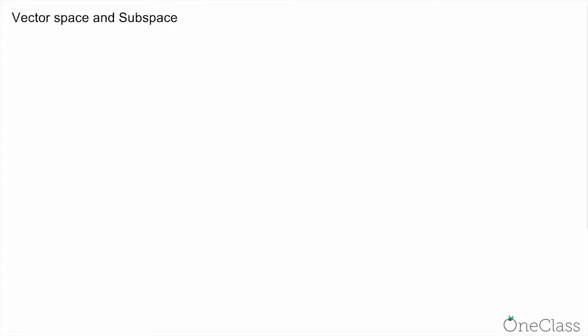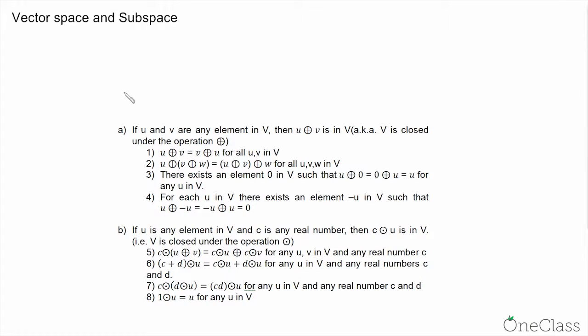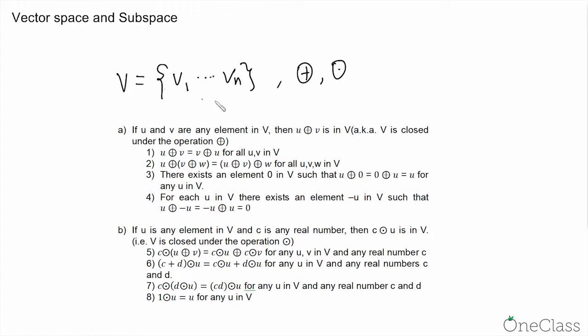This video will discuss the concept of vector space and subspace. Let's first take a look at the definition of vector space. Essentially, vector space is just a set of objects, say v1 to vn, where there are two operations — addition as well as scalar multiplication — that are defined on this set and on all the elements in this set.